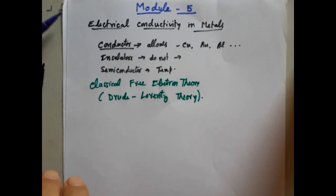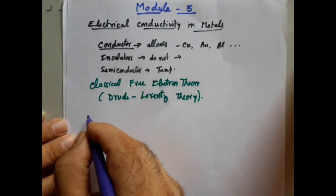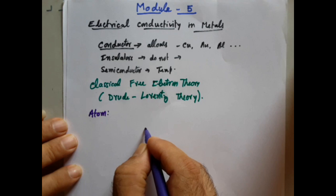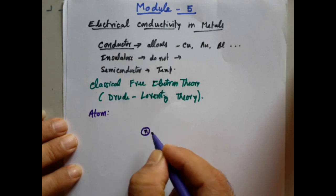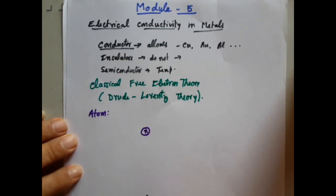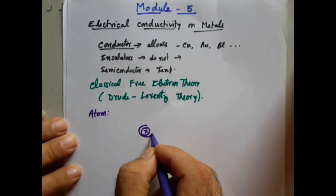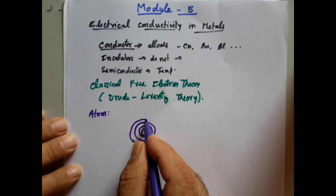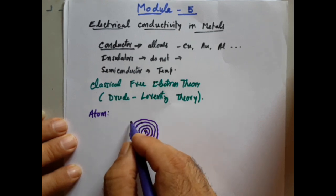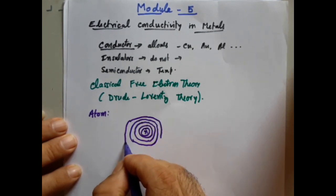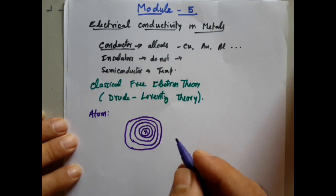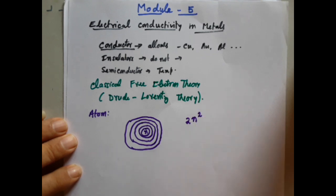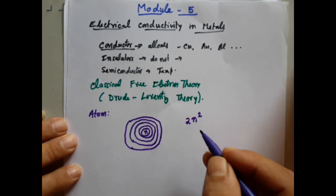To understand the Drude-Lorentz theory, let us consider an atom. We are aware that an atom has a central nucleus where protons and neutrons are present. There are a large number of orbits — according to Bohr's theory, there are infinite orbits around the nucleus. In each orbit there are electrons, and the number of electrons in each orbit is given by the relation 2n², where n is the principal quantum number.